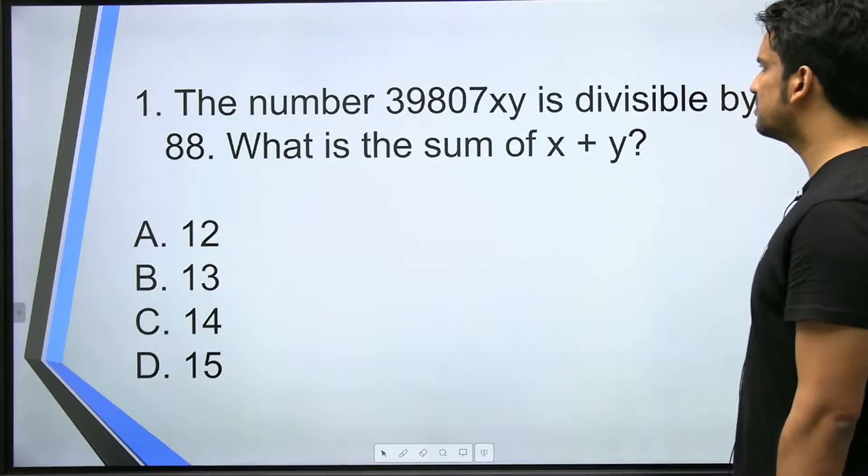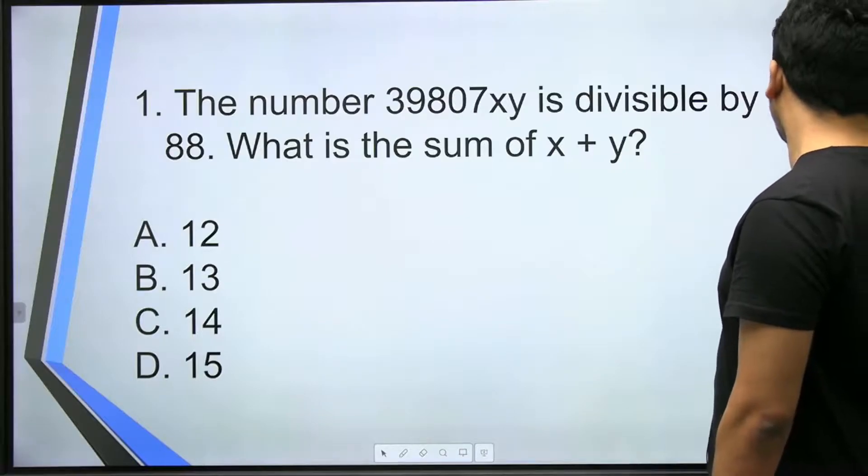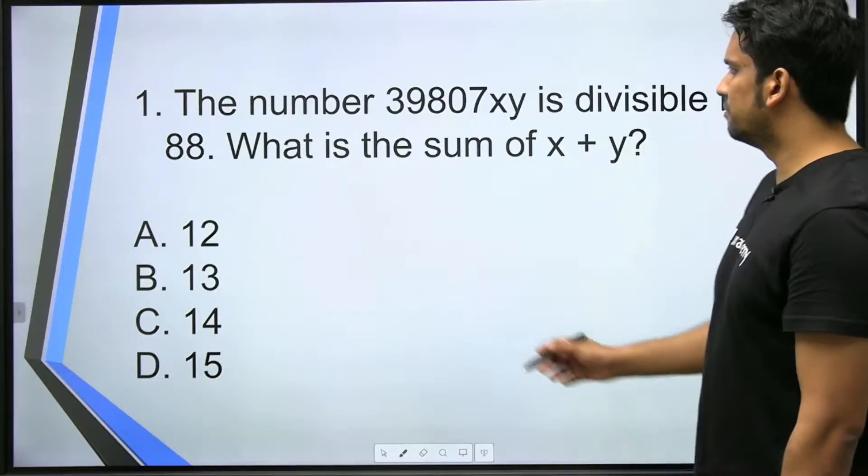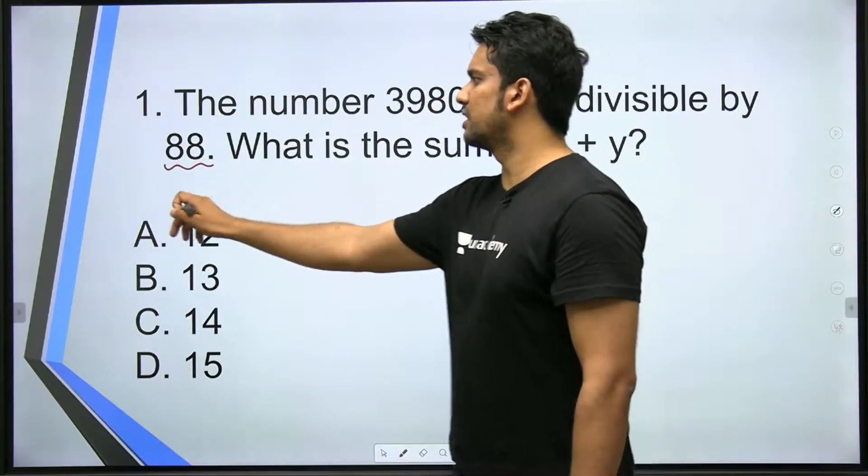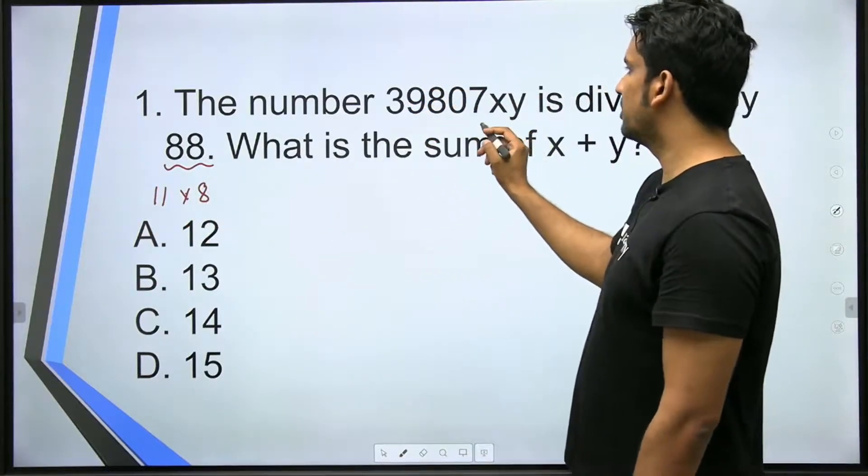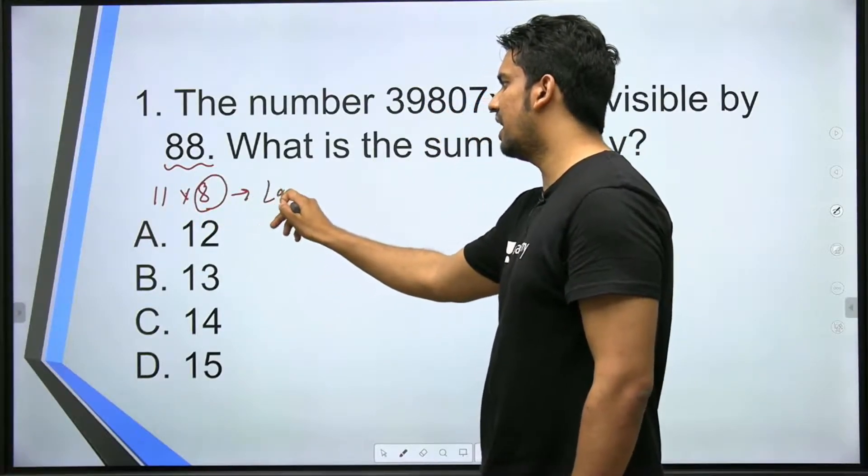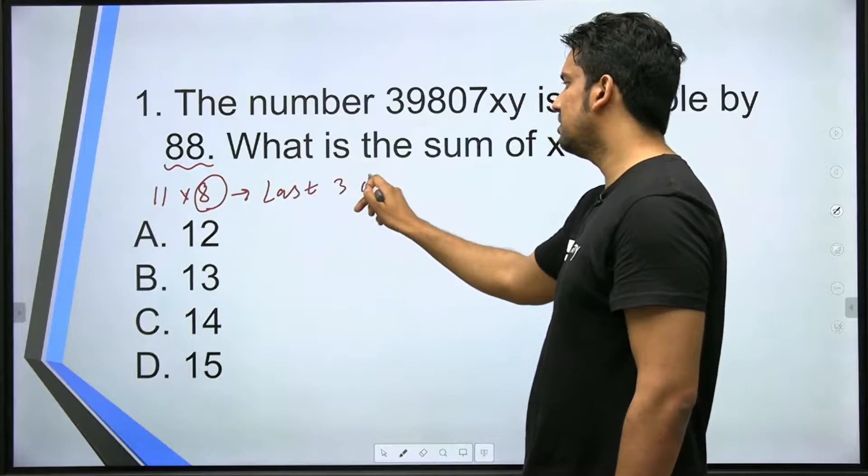So let's quickly solve the first question. The number 39807xy is divisible by 88. What is the sum of x plus y? So 88 divisibility rule is what? 88 divisibility rule is 11 and 8. So that number should be divisible by 11 and 8. Now 8's divisibility rule is last three digits.